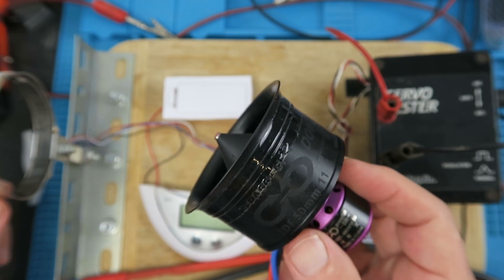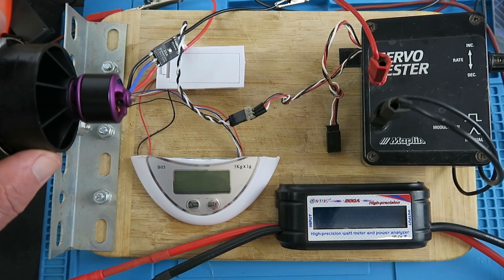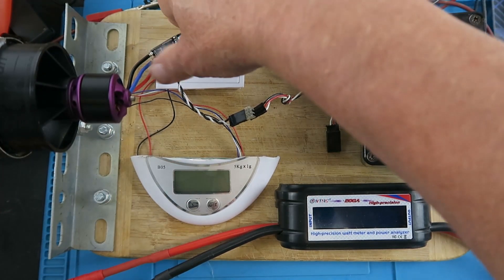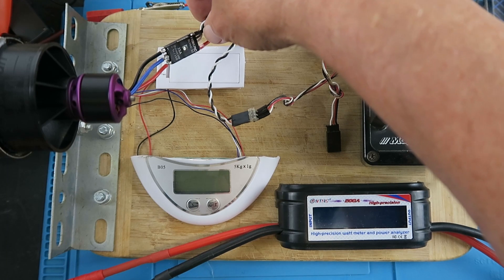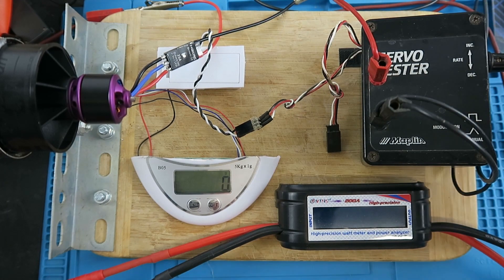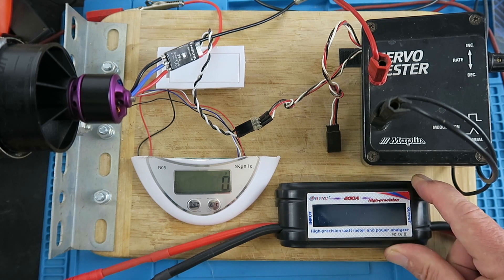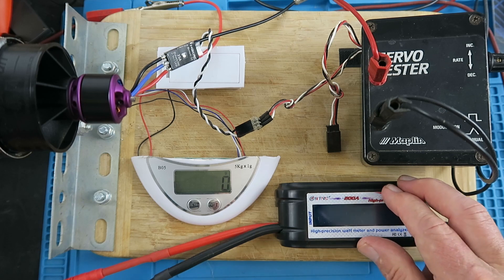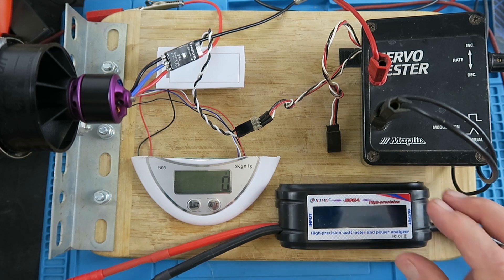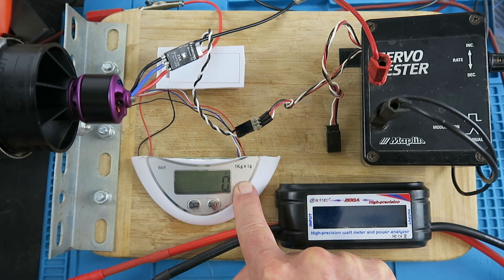With the EDF fan now installed into the test rig, I'm pairing it with the HackRC 35 amp ESC, my faithful Maplin servo tester, and this wattmeter. This wattmeter is especially useful because it will record the peak current and the peak power.